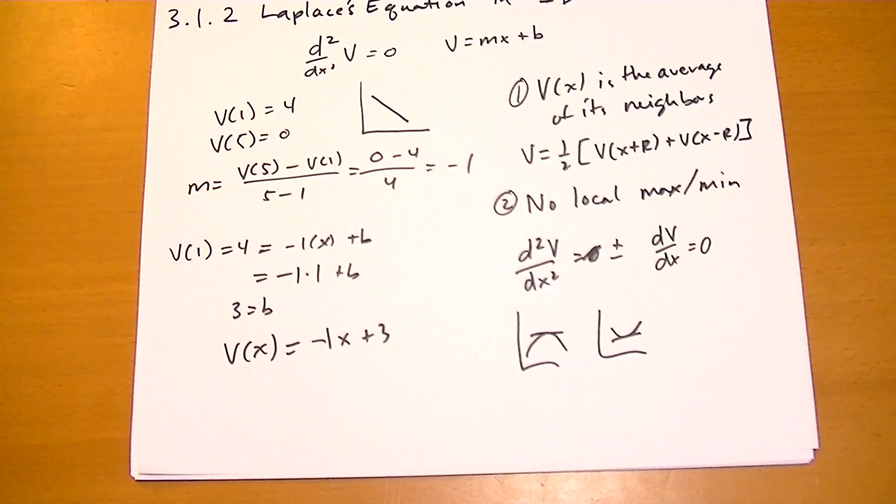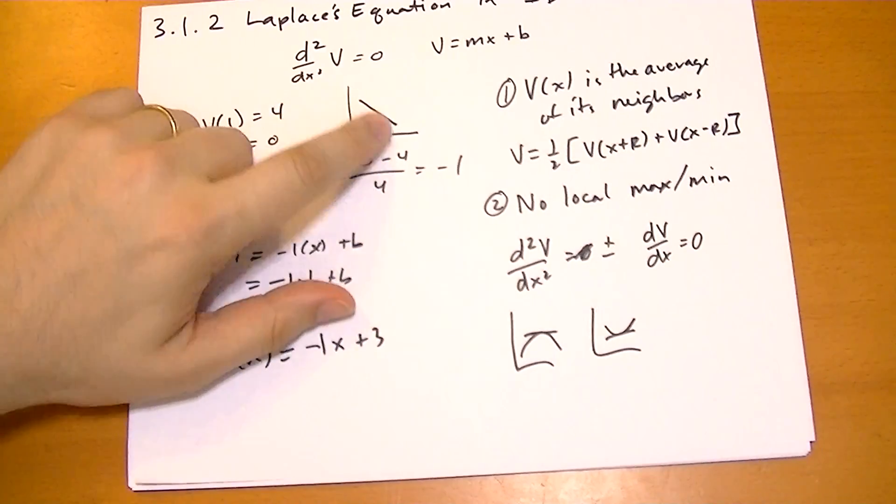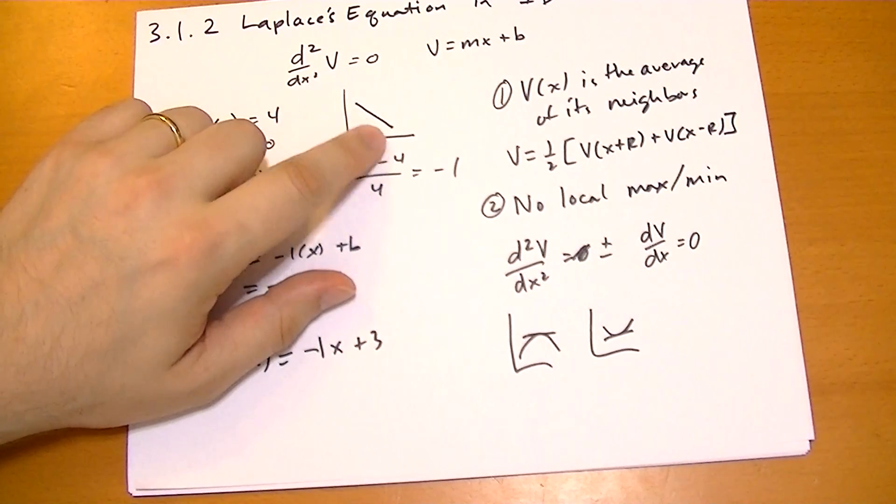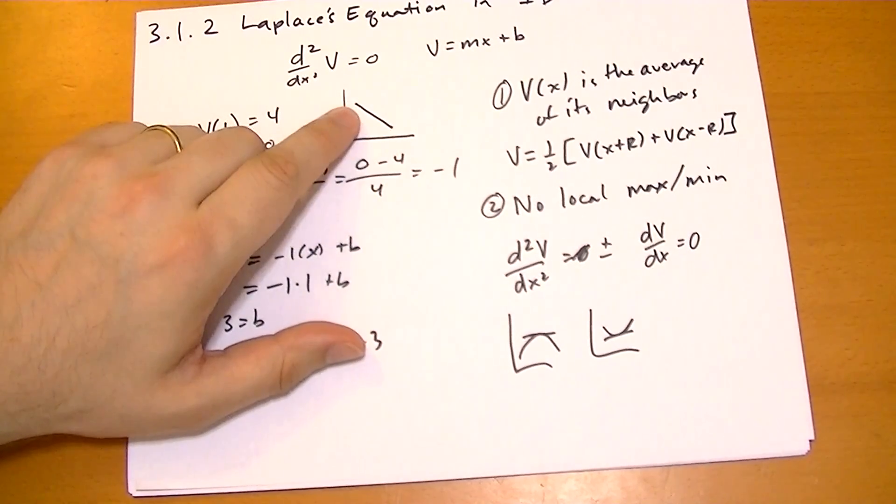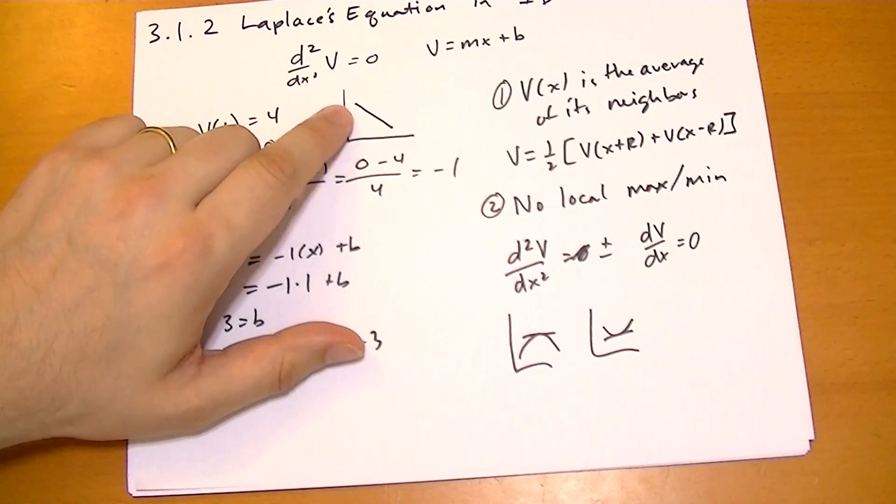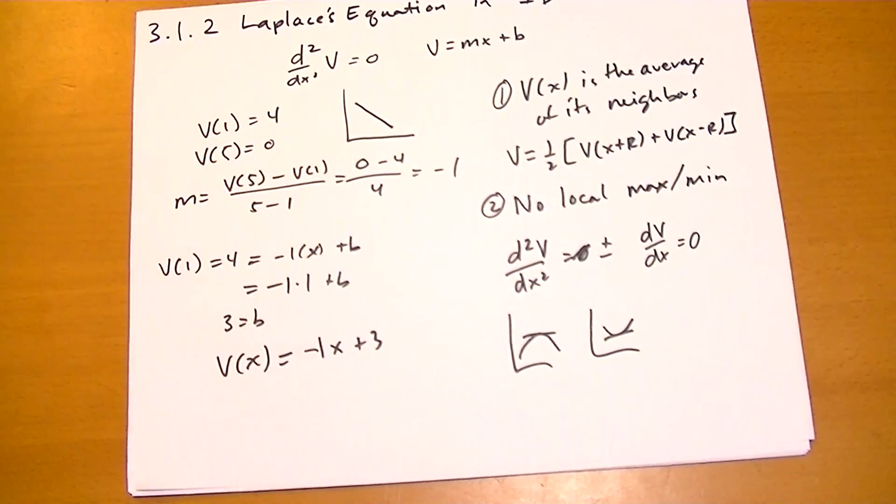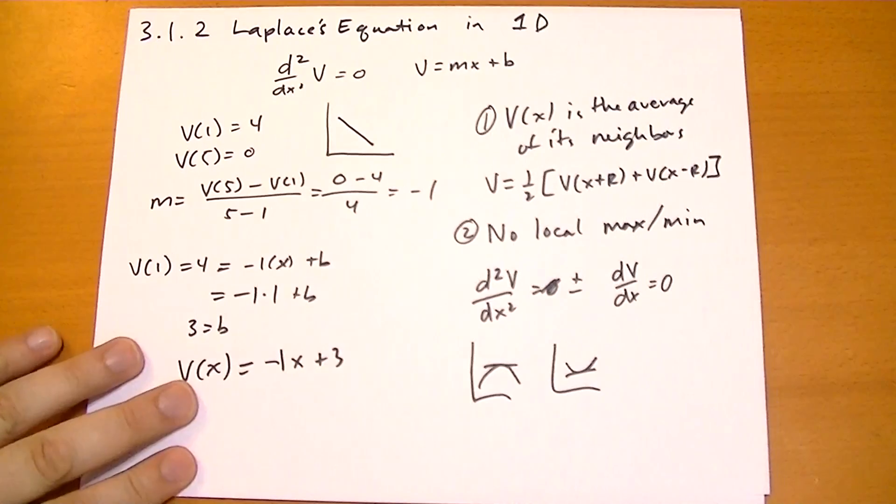So the other interesting thing that kind of falls out of the two of the above, but actually the potential, when you give it the boundary conditions here, it finds the minimum, the minimum line length that'll get you from A to B. So, and that's kind of an interesting thing to know. Okay, next we do two dimensions. Fun.